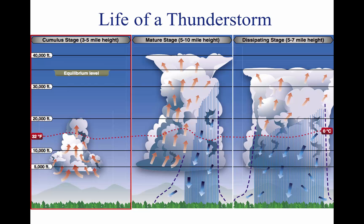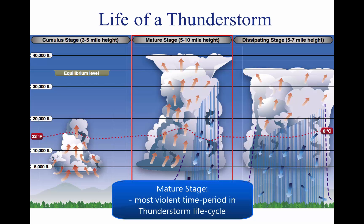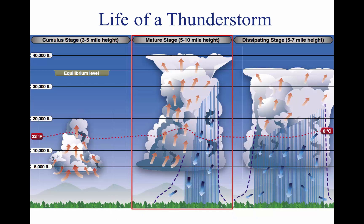Within approximately 15 minutes, the thunderstorm reaches the mature stage, which is the most violent time period of the thunderstorm's life cycle. At this point, drops of moisture — whether rain or ice — are too heavy for the cloud to support and begin falling in the form of rain or hail. This creates a downward motion of the air.